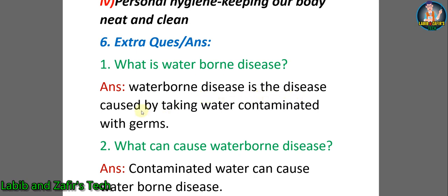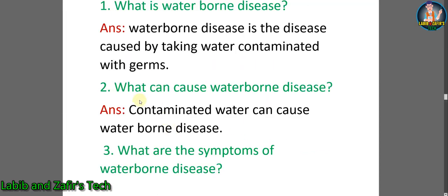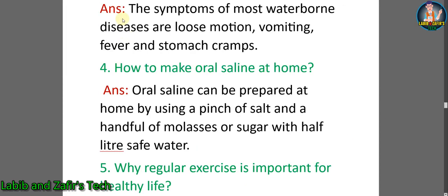Now let's go through some extra question answers. Number one: what is a waterborne disease? Answer: a waterborne disease is a disease caused by taking water contaminated with germs. Number two: what can cause waterborne disease? Answer: contaminated water can cause waterborne disease. Number three: what are the symptoms of waterborne disease? Answer: the symptoms of most waterborne diseases are loose motion, vomiting, fever, and stomach cramps.